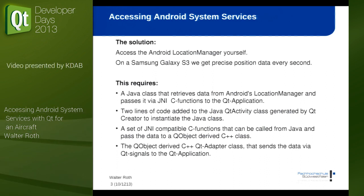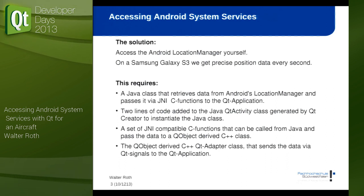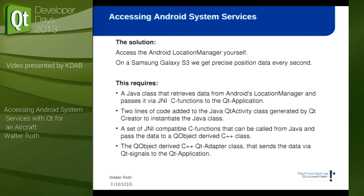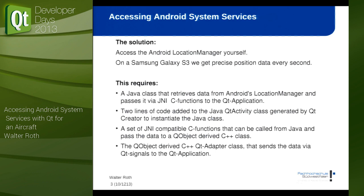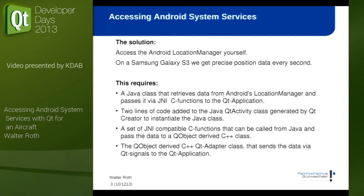You basically need four ingredients for that. You need a Java class that accesses the Android operating system, a little patch in the Qt activity created by Qt Creator, a set of JNI-compatible functions that can be called from the Java class, and finally something like a distribution class that distributes the data to your Qt application via signals and slots.